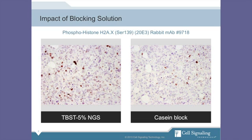Next is the blocking solution. We typically use TBST with 5% normal goat serum, but there are a number of commercially available blocking reagents. Most will have little to no impact on the performance of the antibody, though we have seen that casein-containing solutions can negatively affect staining results, particularly with phospho-specific antibodies. You can see here that there is a reduced nuclear signal obtained with a phospho-H2AX antibody after the section has been blocked with the casein-containing reagent.